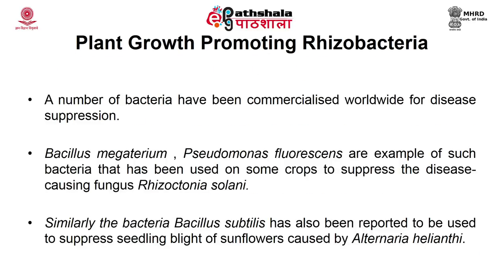Another community of bacteria present in the soil acts as disease suppressors. A number of bacteria have been commercialized worldwide for their disease suppression activity. This suppression is often very specific to particular diseases of particular crops. For example, Bacillus megaterium and Pseudomonas fluorescens are commonly used in some crops to suppress the disease-causing fungus Rhizoctonia. Similarly, Bacillus subtilis has been reported to suppress seedling blight of sunflower caused by Alternaria.